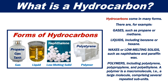Hydrocarbons come in many forms. There are, for example, gases such as propane or methane, liquids including benzene or hexane, waxes or low-melting solids such as paraffin wax, and polymers including polystyrene, polypropylene and polyethylene.